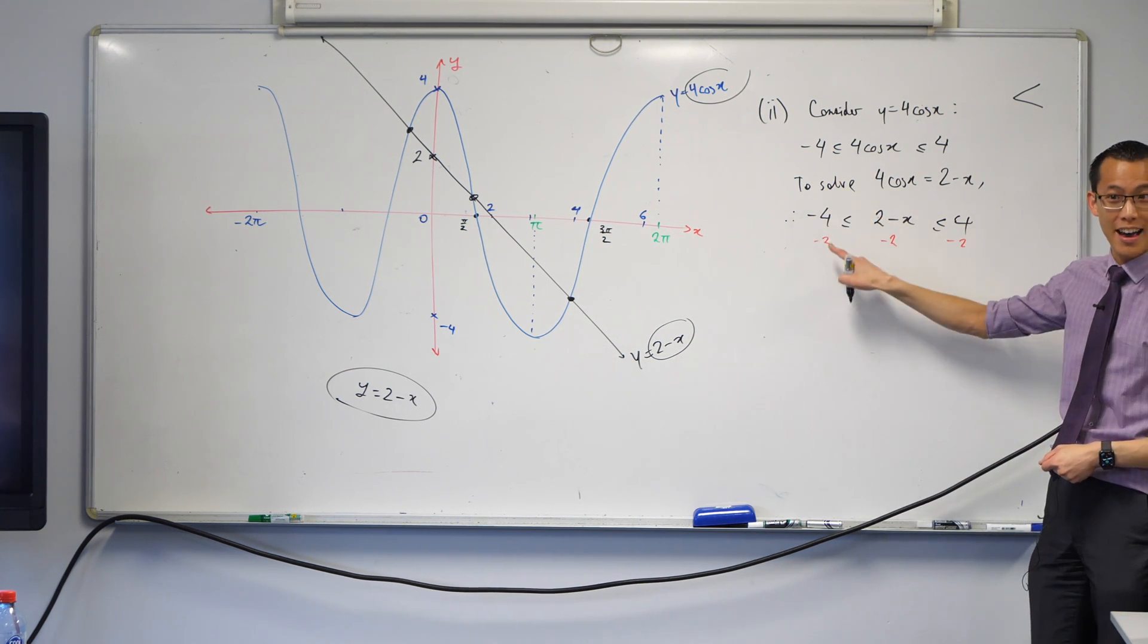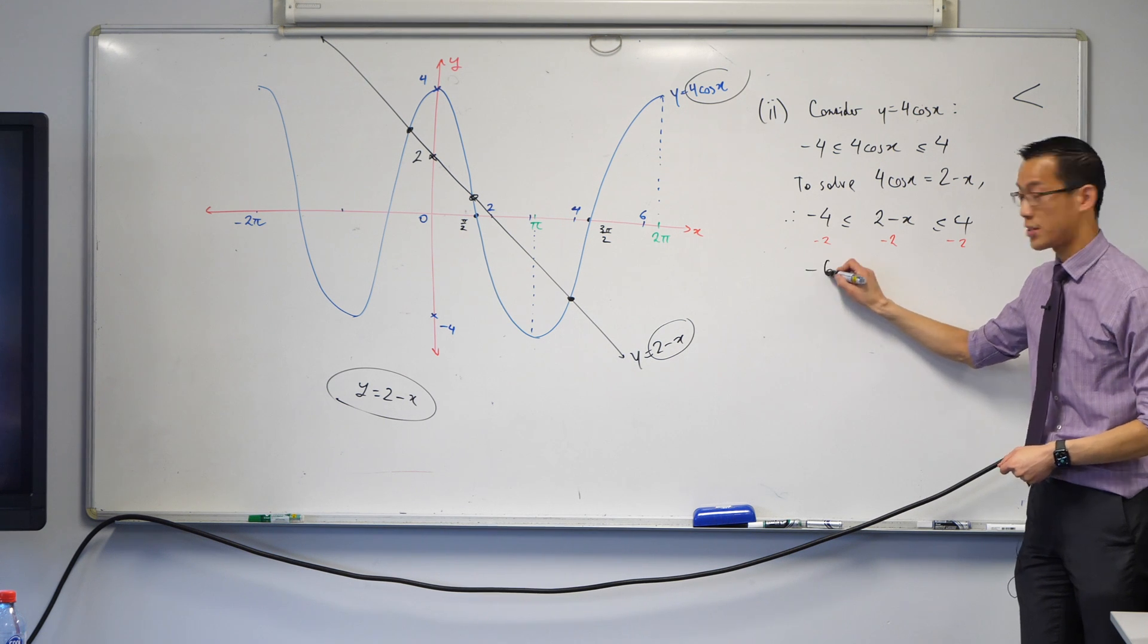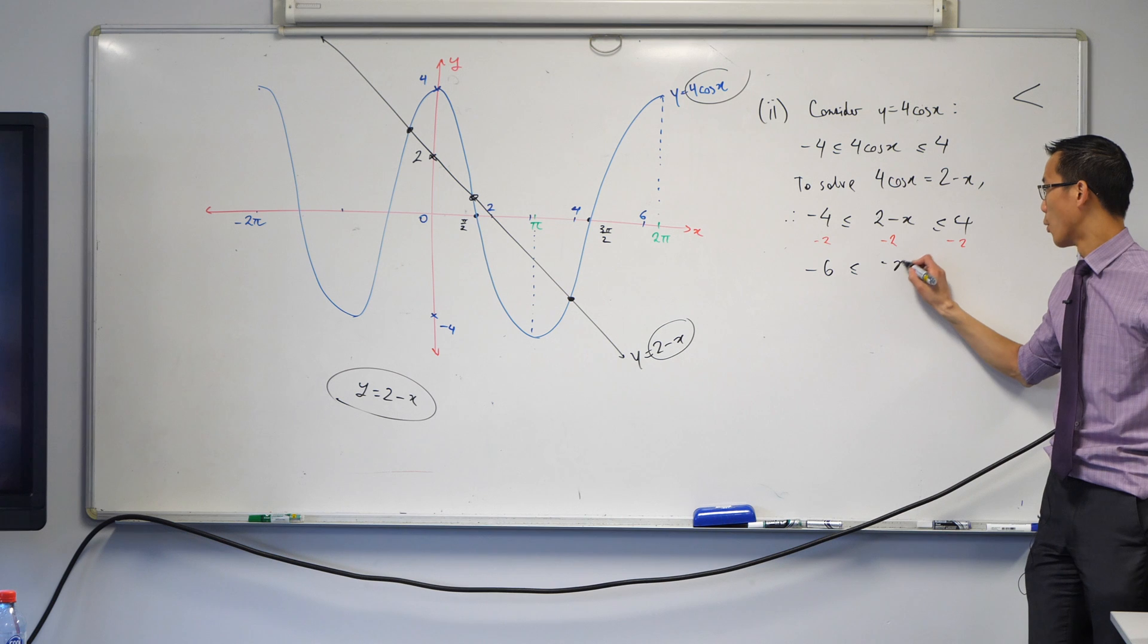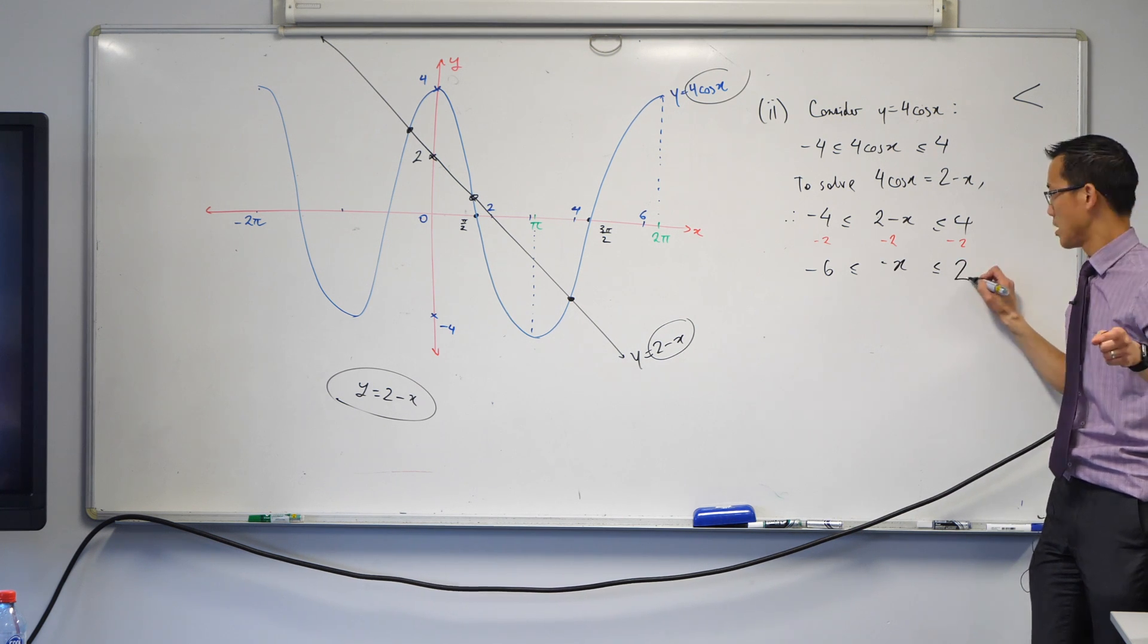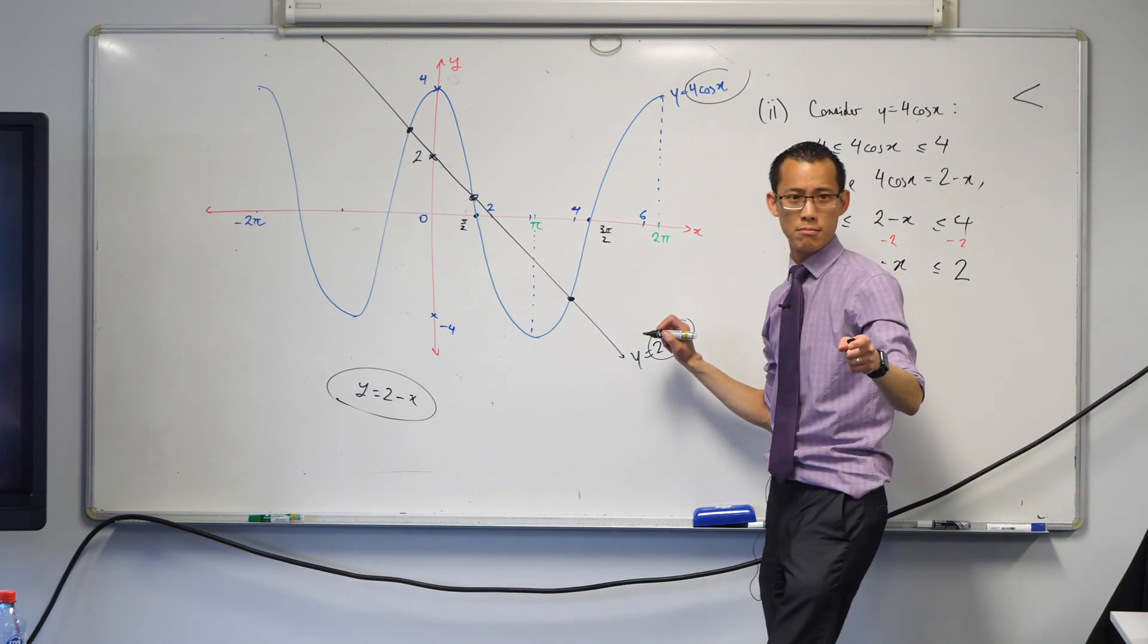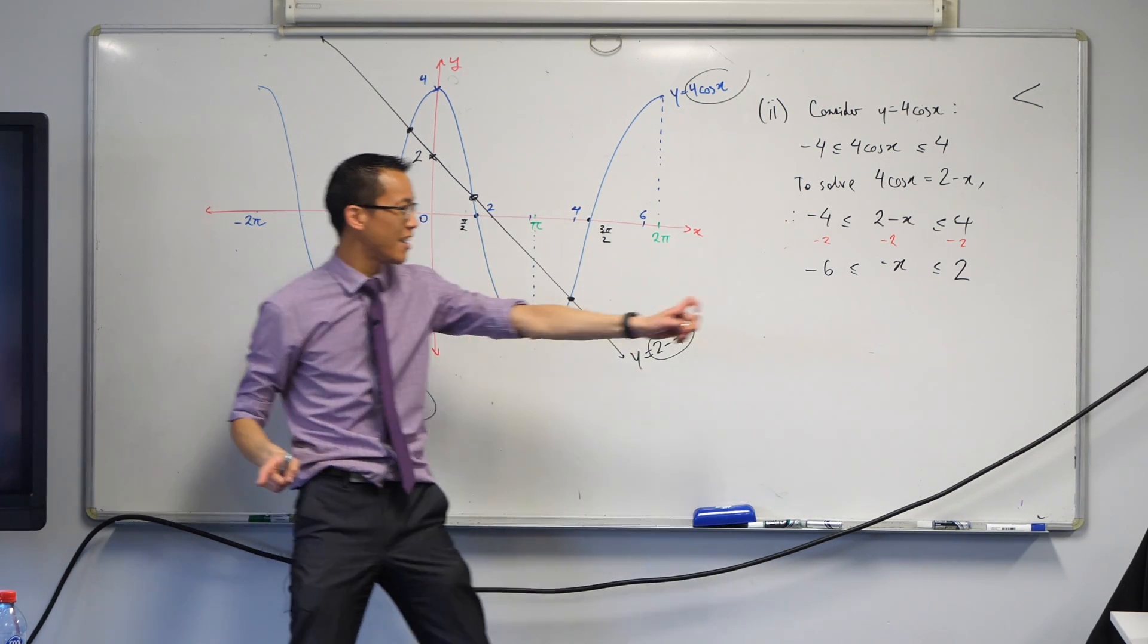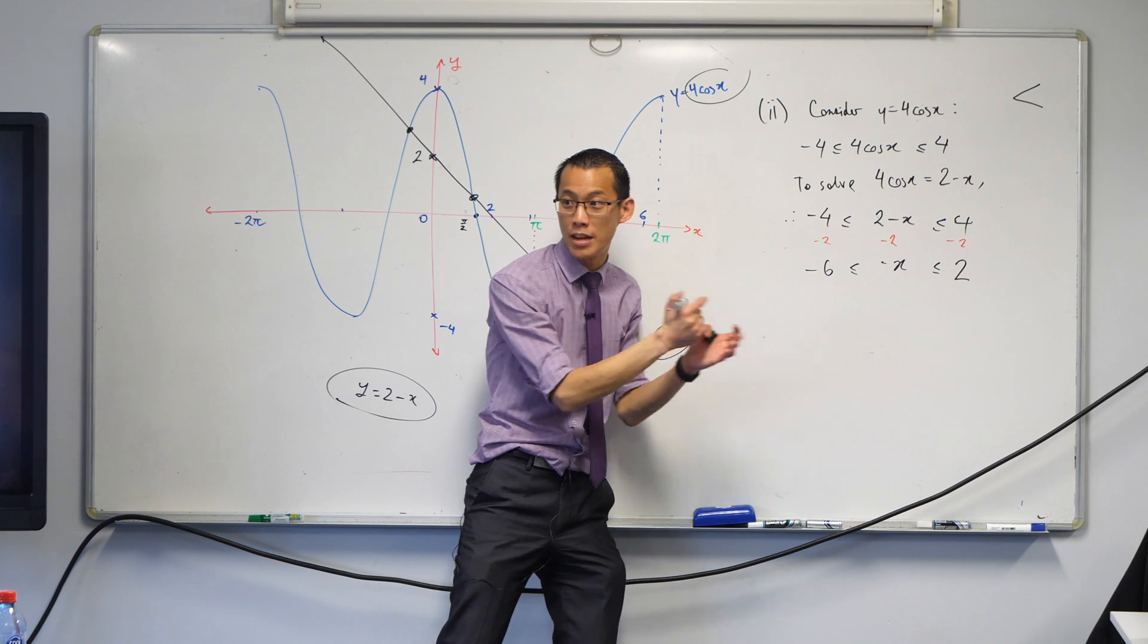So, over here on this side, I get negative six. What do I get in the middle? Negative x, thank you. What do I get on the right hand side? Two. You're like, ooh, wait a second. I wasn't supposed to get negative six. I was supposed to get positive six. But that's okay, because I've got to deal with this minus sign as well. So, what do I do now?